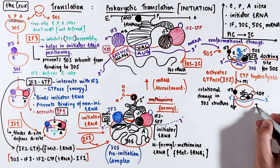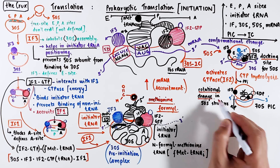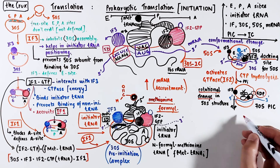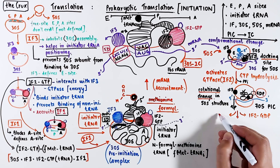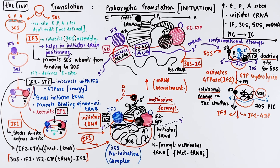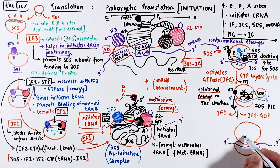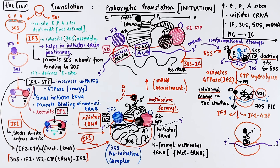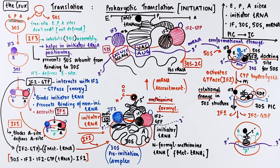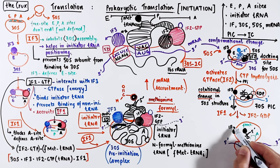This is now called the 70S pre-initiation complex. Because of this rotational change and the fact that IF2 now carries a GDP instead of a GTP, the IF2-GDP loses its affinity for the 30S subunit and is released. Because IF1 interacts closely with IF2, IF1 is also released. Drawing out this new complex, we see that the initiator tRNA is the only thing left behind, still paired with the messenger RNA at the start codon, forming the P site. The A site is empty, and likewise the E site is also empty. The first amino acid present here is the special formyl methionine. Note that IF2 and IF1 are not present, but IF3 still remains attached to the 50S subunit at some non-canonical site.